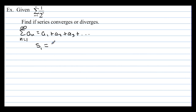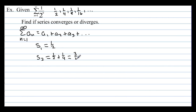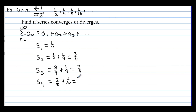The first partial sum s sub 1 is just the first term, which is 1/2. The sequence goes 1/2, 1/4, 1/8, 1/16, and so on. So s sub 2 equals 1/2 plus 1/4, which is 3/4. Then s sub 3 equals 3/4 plus 1/8, which is 7/8. And the fourth partial sum is 7/8 plus 1/16, which is 15/16. Looking at the numerators 1, 3, 7, 15 — these are powers of 2 minus 1.